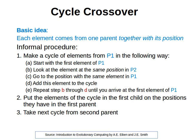The procedure is as follows. We have two parents, p1 and p2. We make a cycle of elements from p1 as follows. We start at the first element of the first parent. We look at the element at the same position in the second parent. Then we go to the position occupied by the same element in parent1, and we add it to the cycle.